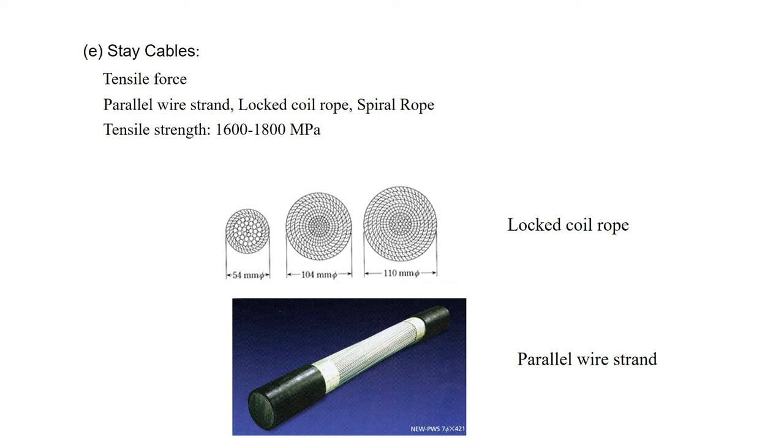Stay cables. Stay cables are subjected to tensile forces. Parallel wire strand, locked-coil rope, spiral rope are commonly used on the modern cable-stayed bridge. Its tensile strength is usually 1600 to 1800 MPa. The surface of the cable is covered with polyethylene tubes or panes to prevent corrosion.